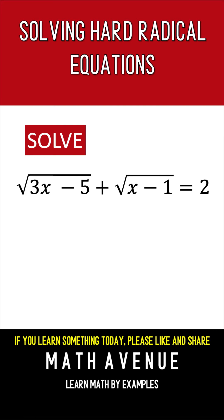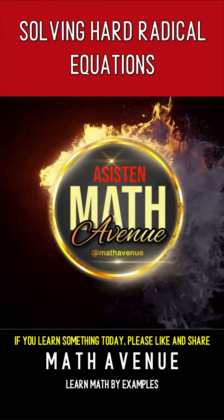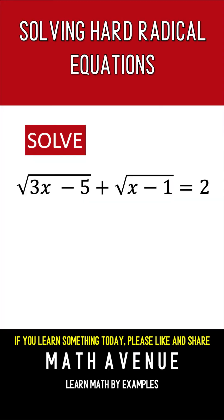In this video, we are going to solve this hard radical equation. This is Lando Assistant from Math Avenue. Here's our problem: solve this radical equation — the square root of 3x minus 5 plus the square root of x minus 1 is equal to 2.